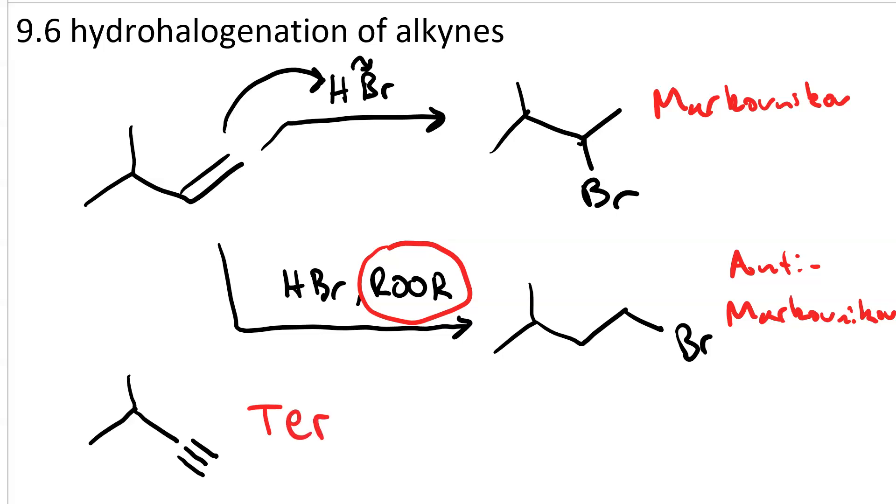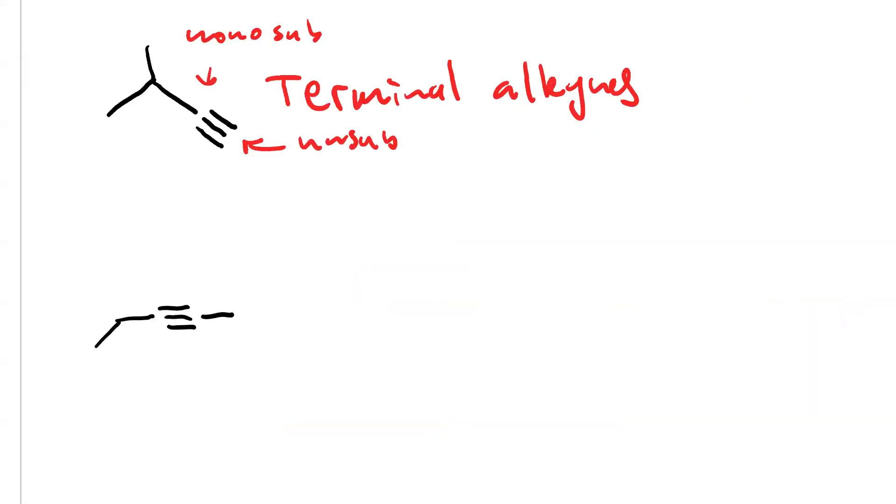Note that to see a difference in regiochemistry, we need to work with terminal alkynes because otherwise there's no difference in substitution. In the triple bond of a terminal alkyne, one side is unsubstituted and the other is monosubstituted. With an internal alkyne as shown here, both of the triple bonded carbons are monosubstituted. So we can only apply Markovnikov and anti-Markovnikov when we're talking about the terminal alkynes.